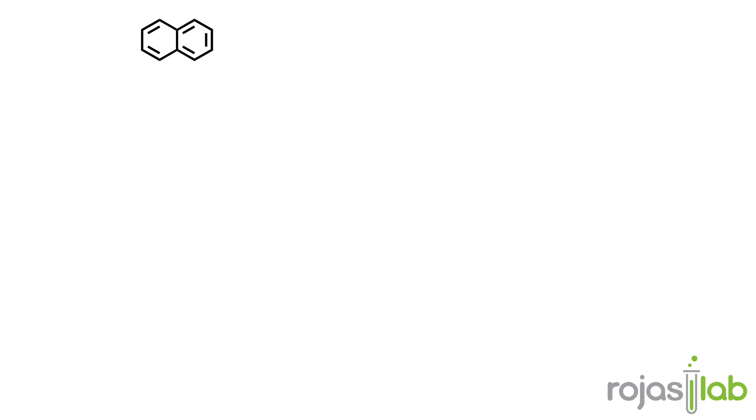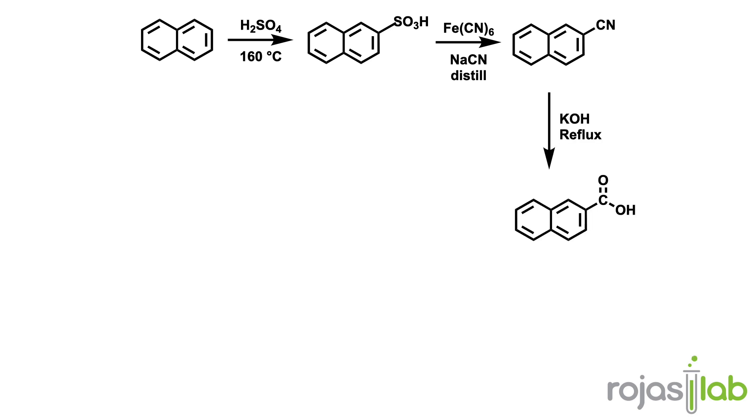So putting this all together, the first step is going to be to sulfonate that bicyclic ring, substitute the sulfonate group using hexacyano iron to end up with a nitrile that can be turned into a carboxylic acid using KOH under reflux conditions.